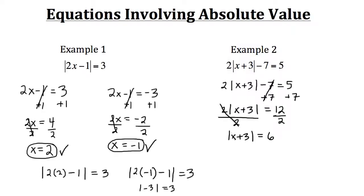Now we're in a similar position as we started in example 1. The absolute value is the distance a certain point is from the origin, and right now we know that distance is 6. So either it was on the positive side — positive 6 — or on the negative side of the number line — negative 6. We need to look at both cases.